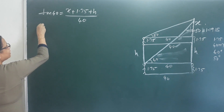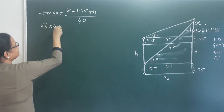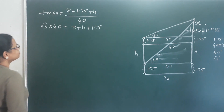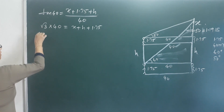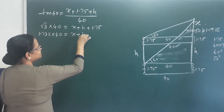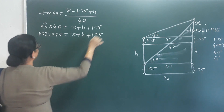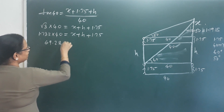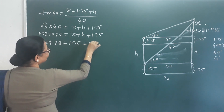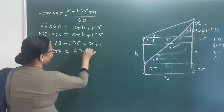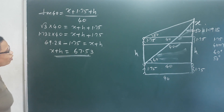Tan 60 equals root 3, so root 3 times 40 equals X plus H plus 1.75. That is, 1.732 times 40 equals X plus H plus 1.75.